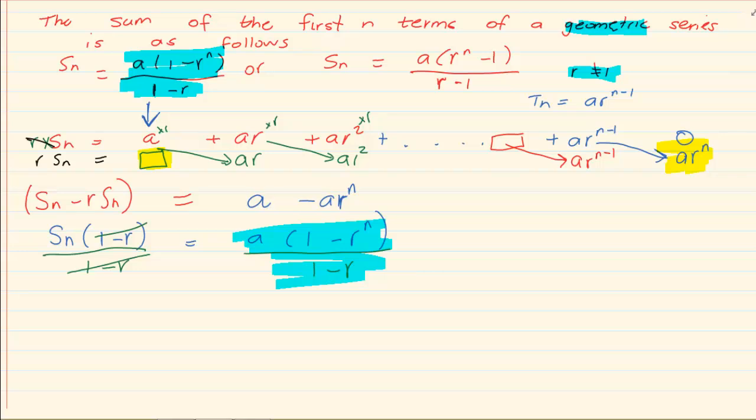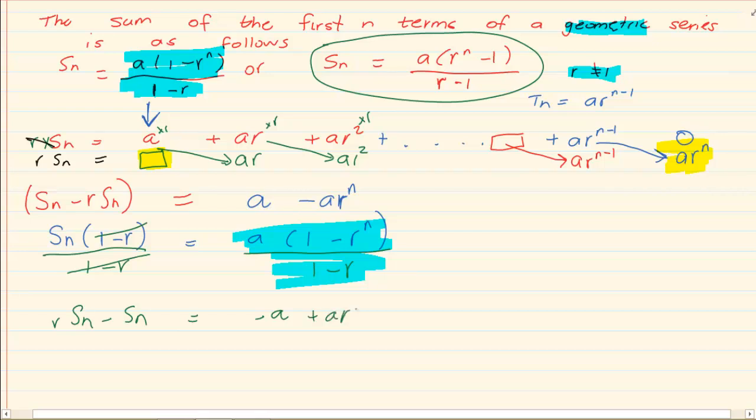If you want to prove this proof. Then the work is exactly the same. But instead of saying Sn minus rSn you would actually say rSn minus Sn. So what we are doing is we are saying 0 minus a and then we are subtracting everything. So we would have 0 minus a which is minus a and ar to the power of n minus 0 which is a positive ar to the power of n.